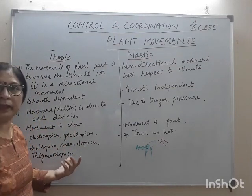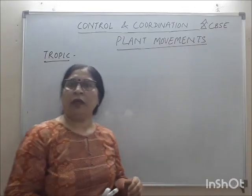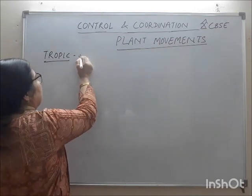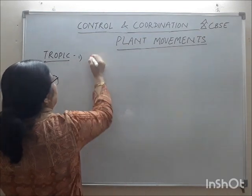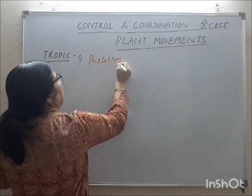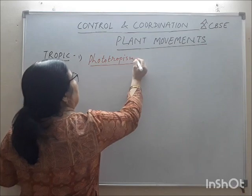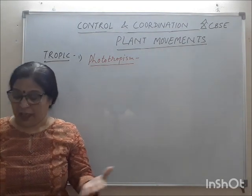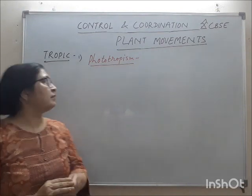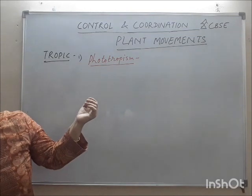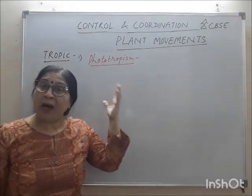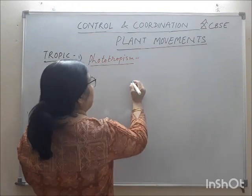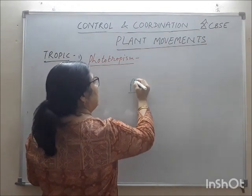Now I will take tropic movements one by one. First is phototropism. Phototropism means the movement of a plant towards light — light ki taraf jo movement hota hai. Photo means light. So the movement of parts of a plant towards the light is known as phototropism. Auxin helps explain how this happens.